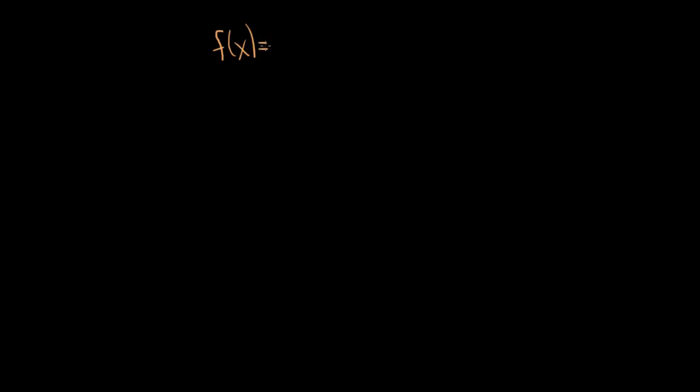I'm going to answer a quick homework question. We have the function f of x equals cosecant x, and the question is to find the second derivative.